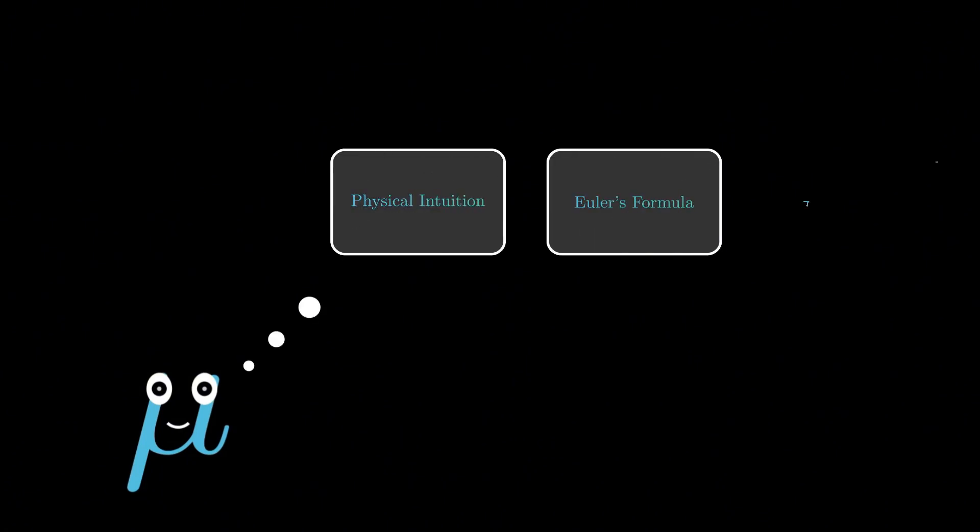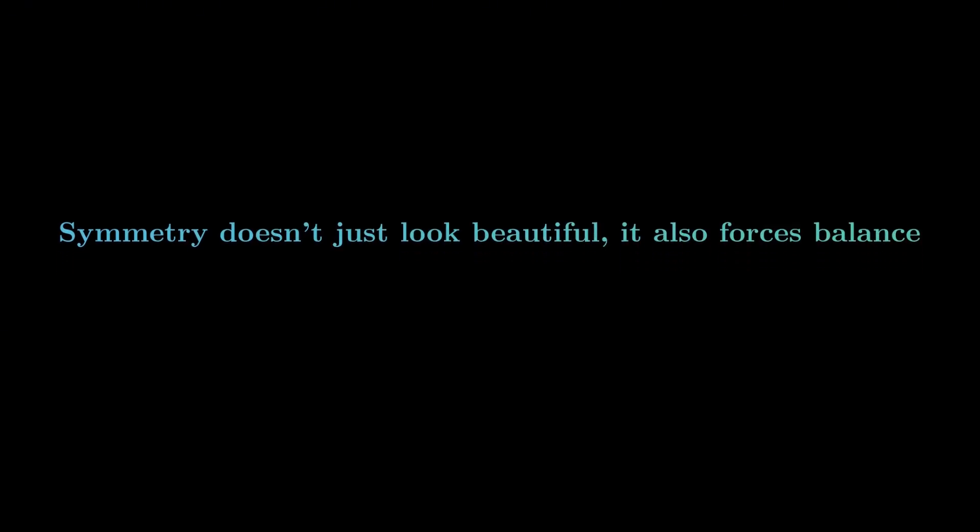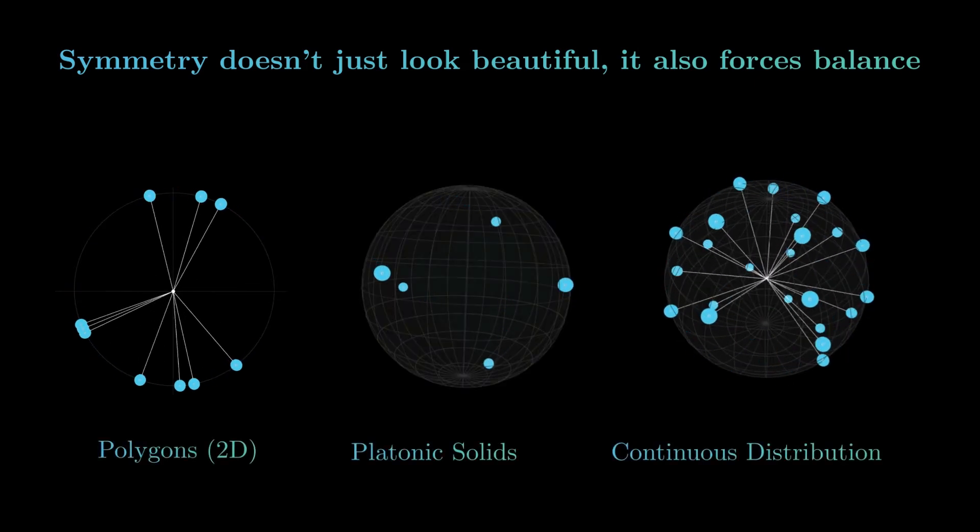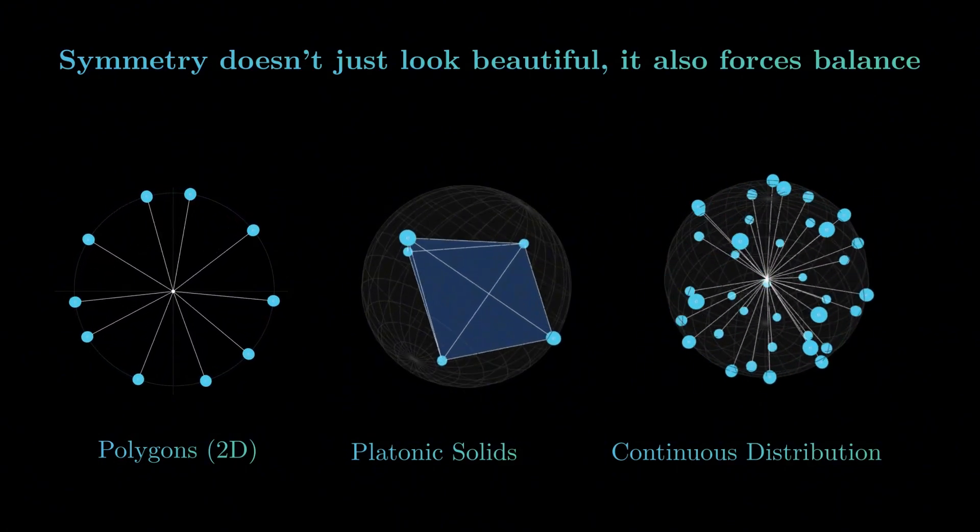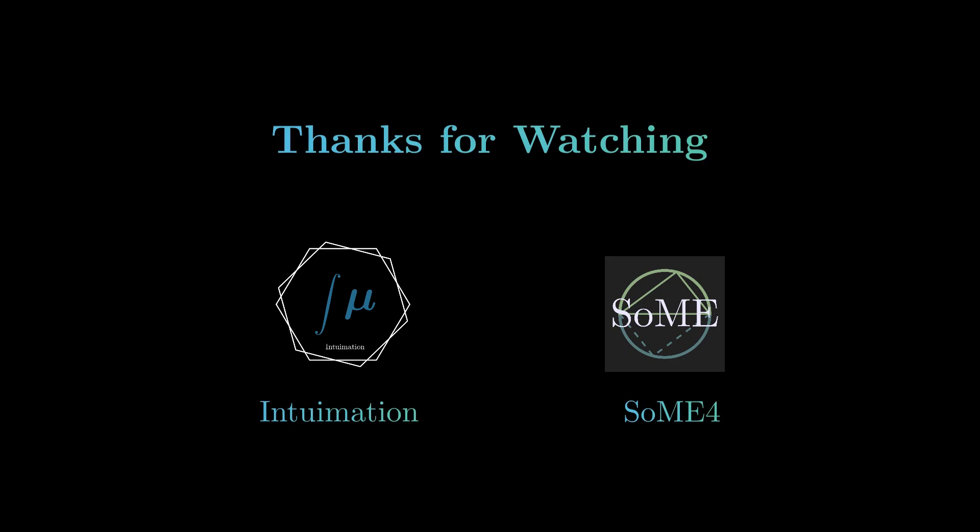And there you have it. Throughout this journey we saw how physical intuition, Euler's formula, and group theory all come together to reveal one powerful idea: symmetry doesn't just look beautiful, it forces balance. Whether it's polygons on a plane, Platonic solids in space, or continuous distributions on a sphere, the mathematics leaves no room for imbalance. And that's why nature leans on symmetry so often. Thanks for watching, and in the spirit of Summer of Math Exposition, I hope this video sparks ideas that both teachers and students find useful. I'll see you in the next one.